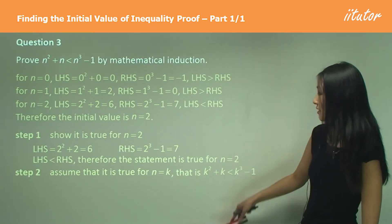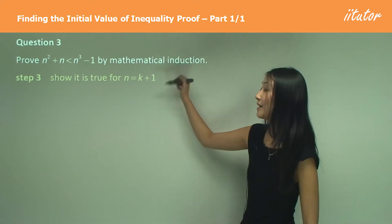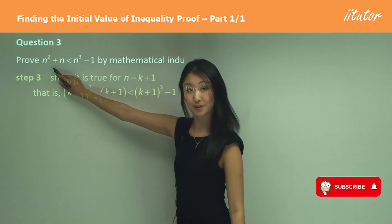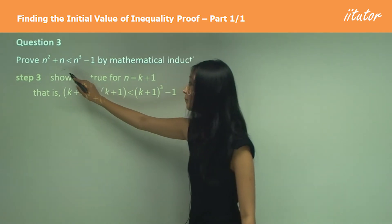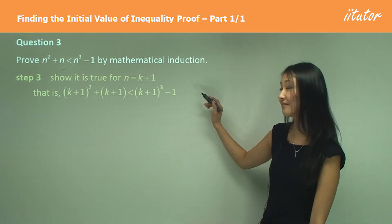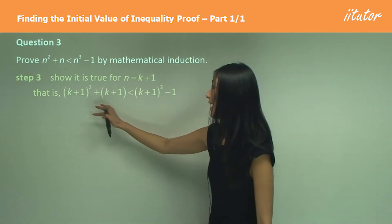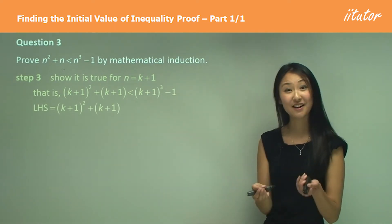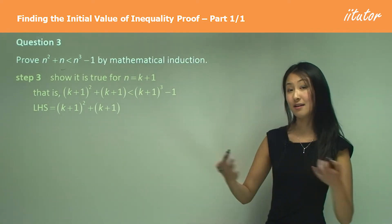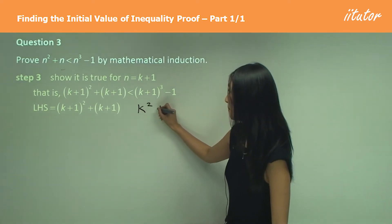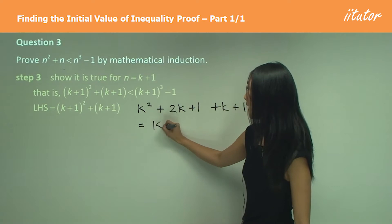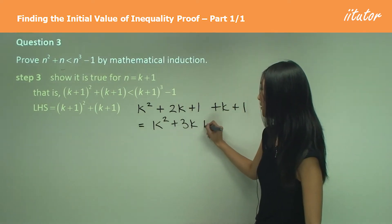We move on to Step 3 where we show it is true for n equals k plus 1. Substituting in, the left-hand side becomes k plus 1 squared plus k plus 1, and the right-hand side becomes k plus 1 cubed minus 1. This is the inequality we're trying to prove — we want to show the left-hand side is less than the right-hand side. Starting with the left-hand side, we expand k plus 1 squared plus k plus 1, which gives k squared plus 2k plus 1 plus k plus 1, equalling k squared plus 3k plus 2.